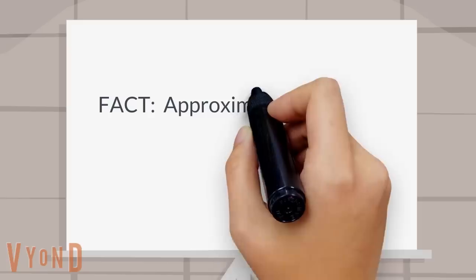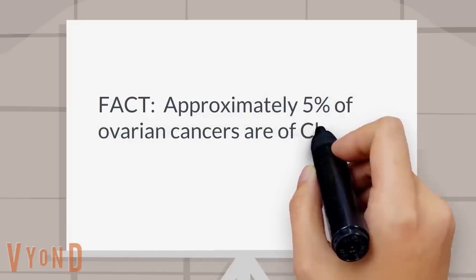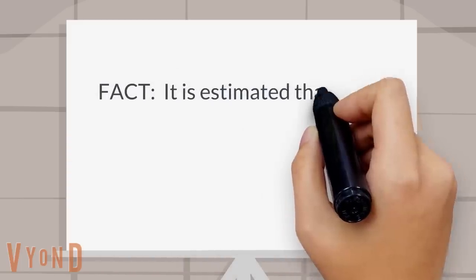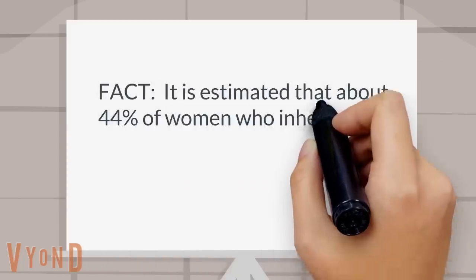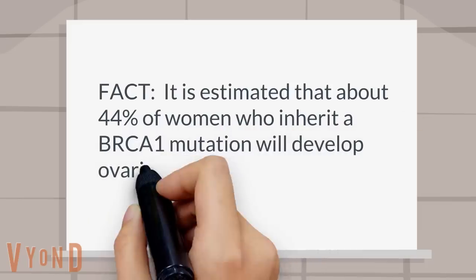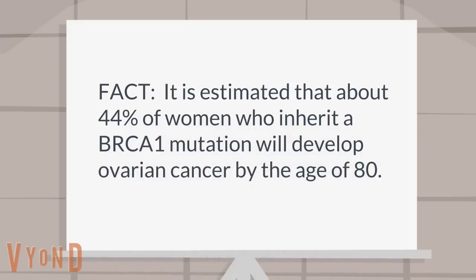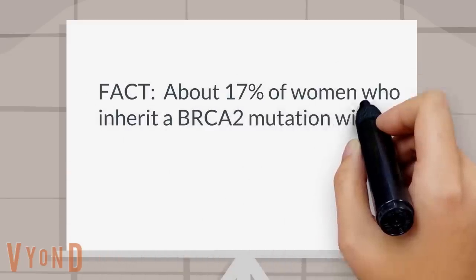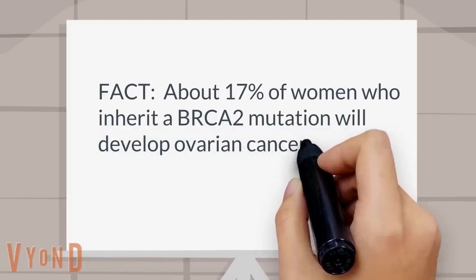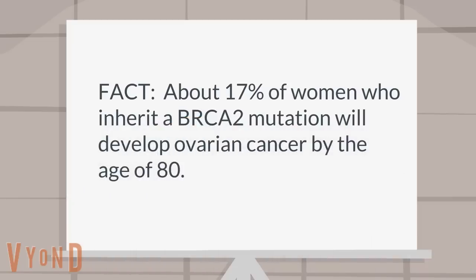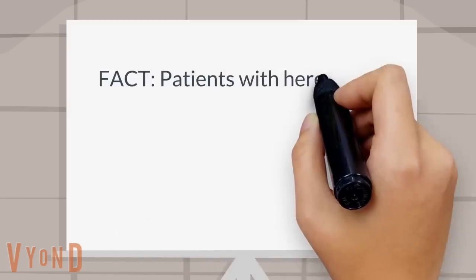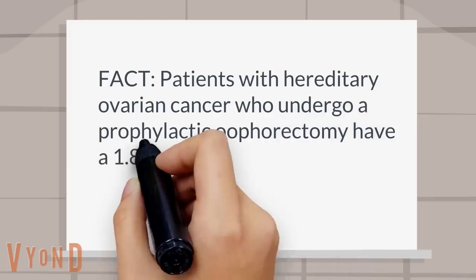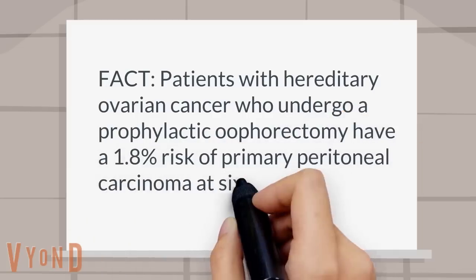Fact: Approximately 5 percent of ovarian cancers are of clear cell subtype. Fact: It is estimated that about 44 percent of women who inherit a BRCA1 mutation will develop ovarian cancer by the age of 80. Fact: About 17 percent of women who inherit a BRCA2 mutation will develop ovarian cancer by the age of 80. Fact: Patients with hereditary ovarian cancer who undergo a prophylactic oophorectomy have a 1.8 percent risk of primary peritoneal carcinoma at 6 years.